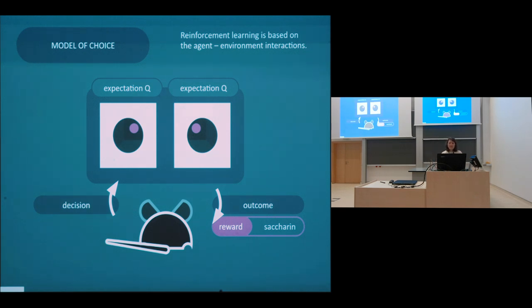As a ground rule, it is made by certain iterative interaction with the environment of the agent. Basically, an agent, for us it's a mouse, performs a decision, chooses between options, and gets the outcome of the decision. After many trials, an animal begins to have certain expectation towards each option, denoted as Q value.